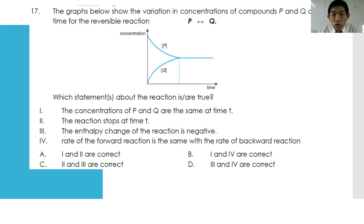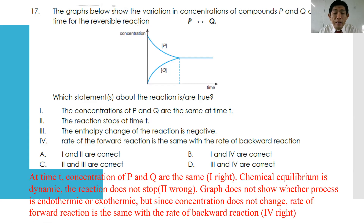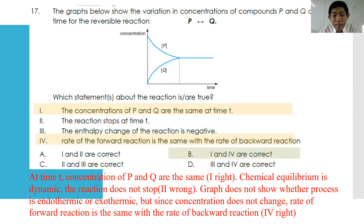Number seventeen: the graph shows variation in concentration of products P and Q against time for a reversible reaction. P and Q increase until a constant value is reached at time T. Statement one: concentrations of P and Q are the same at time T — correct, as shown. Statement two: the reaction stopped at time T — not true; the reaction is still ongoing but concentrations are constant. Statement three: entropy change of the reaction is negative — this cannot be determined from concentration changes alone. Statement four: rate of forward reaction equals rate of backward reaction — true, as equilibrium has been achieved. Answer: 1 and 4.